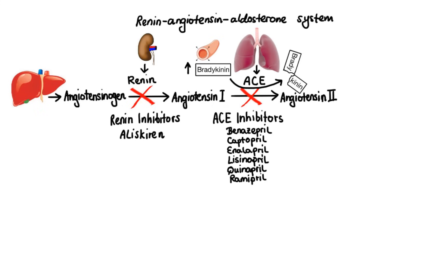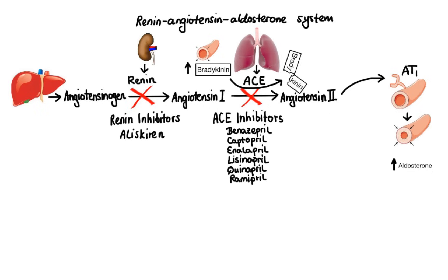Finally, we have angiotensin-2 receptors type 1, or AT1 receptors for short. Binding of angiotensin-2 to these receptors is actually responsible for most of the effects of angiotensin-2 including vasoconstriction and stimulation of aldosterone release. These receptors are the target of angiotensin-2 receptor blockers, or ARBs for short. Examples of drugs that belong to this class are candesartan, irbesartan, losartan, olmesartan, and valsartan.